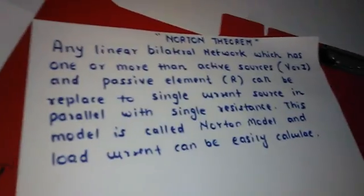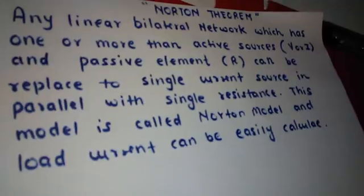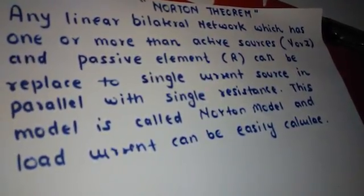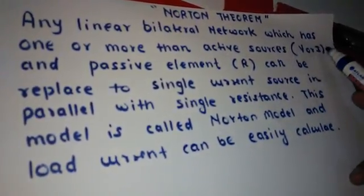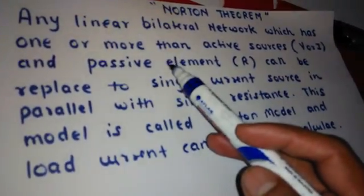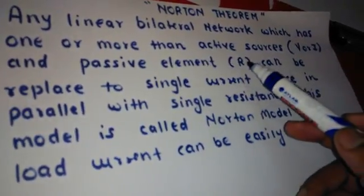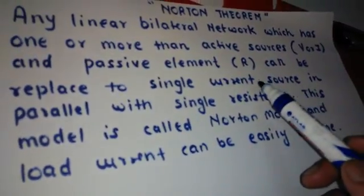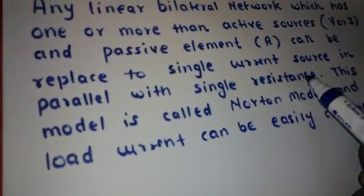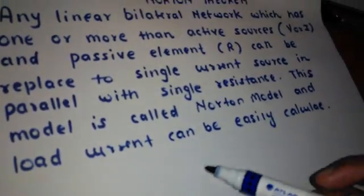Hello friends, today we are discussing about the Norton theorem. Norton theorem is a dual of Thevenin theorem. Any linear bilateral network which is a DC circuit, which has one or more active sources — active sources can be voltage sources or current sources — and passive elements, which store or dissipate energy, can be replaced by a single current source called the Norton current, in parallel with a single resistance. This combination makes a Norton model and the load current can be easily calculated.